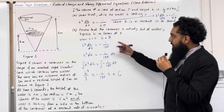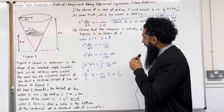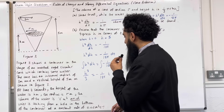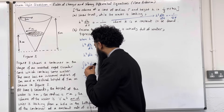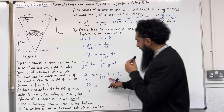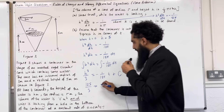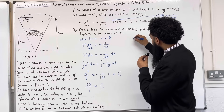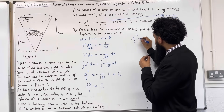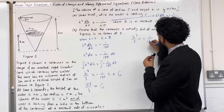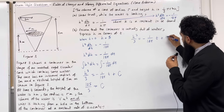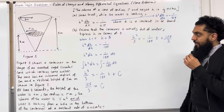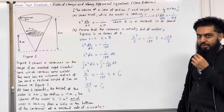Now substitute the boundary conditions: when t = 0, h = 5. Substituting h = 5 gives 5³/3 = 125/3. Substituting t = 0 gives c = 125/3. Substituting c back into the equation: h³/3 = −t over 18π + 125/3. The question asks to express h in terms of t, so I need to make h the subject.